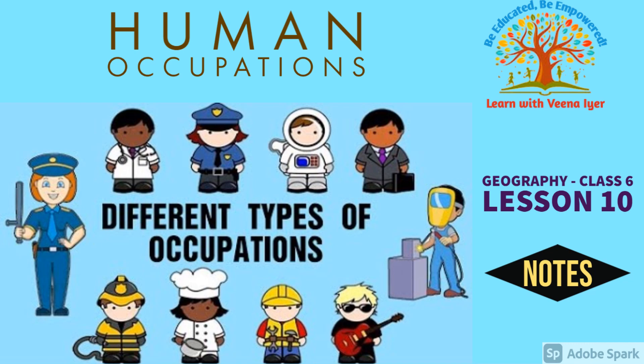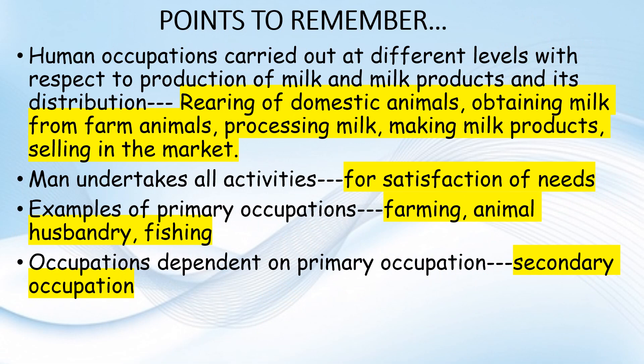Today we are here with the notes of Lesson 10: Human Occupations — Points to Remember. As usual, these points are very important when you revise or recollect topics. Human occupations carried out at different levels with respect to production of milk and milk products include: rearing of domestic animals, obtaining milk from farm animals, processing milk, making milk products, and selling in the market.